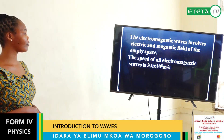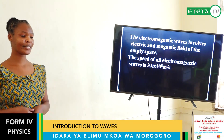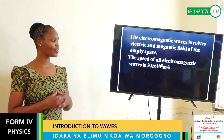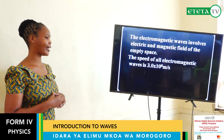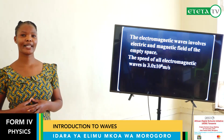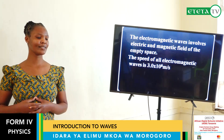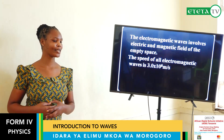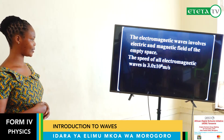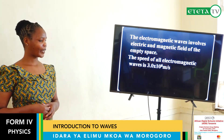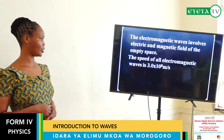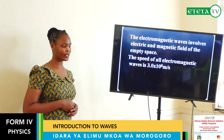Electromagnetic waves involve electricity and the magnetic field of empty space. Because these are the types of waves which do not require any medium for transmission, they can even travel in a vacuum. All electromagnetic waves travel at the speed of light, which is 3×10⁸ meters per second.